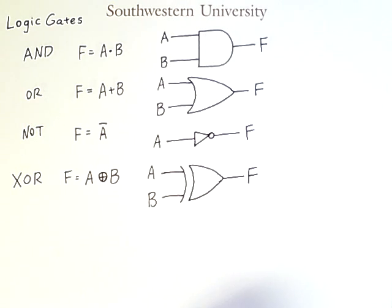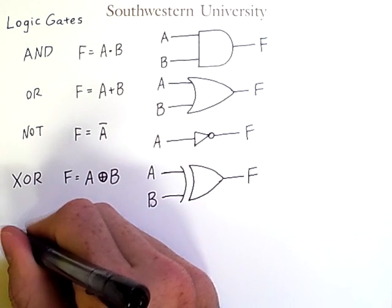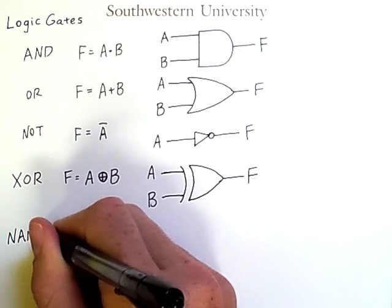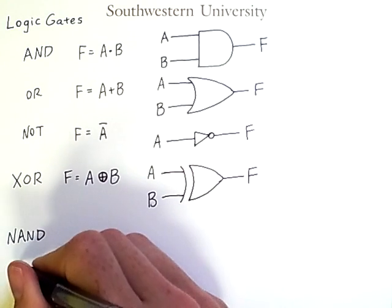Now these are the only operations we've discussed so far, but there are two other common gates. They are called NAND and NOR.